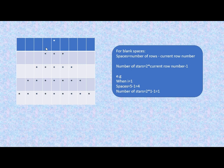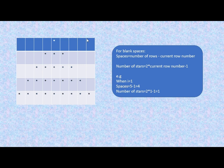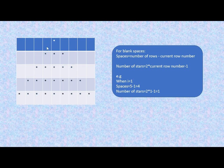One very important thing: in each row there are some blank spaces. In the first row there are four blank spaces, in the second row there are three blank spaces, in the third row there are two, and in the fourth row there is only one blank space. We have to create a formula to obtain this number of blank spaces. The number of blank spaces equals the total number of rows minus the current row number. When the current row number is one and the total is five, that gives five minus one, which is four blank spaces.